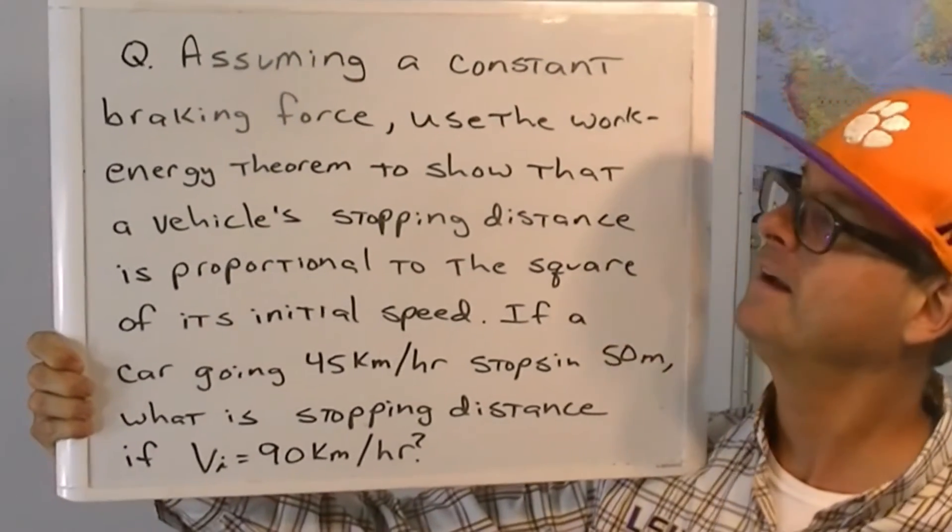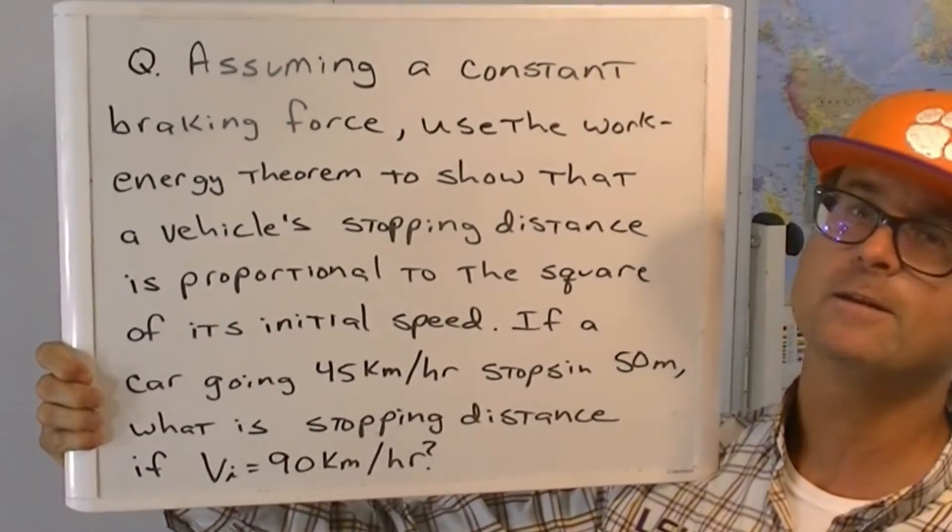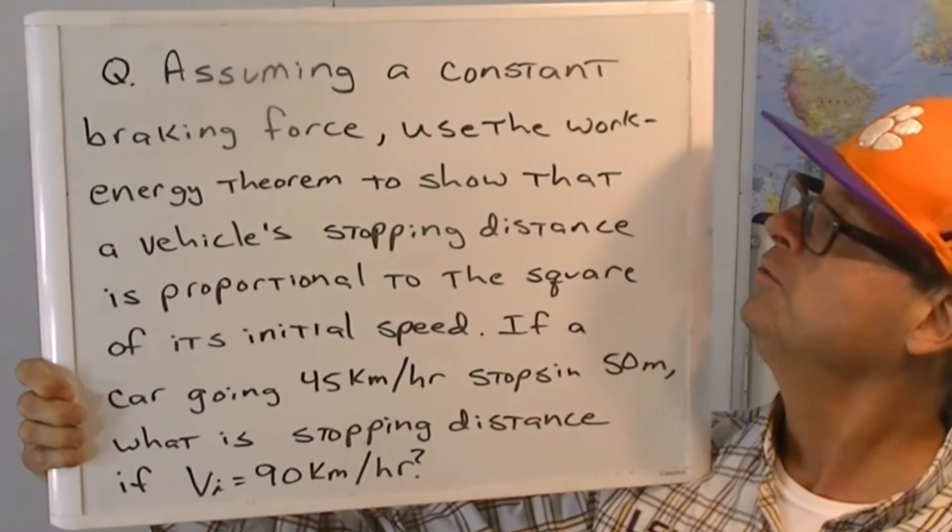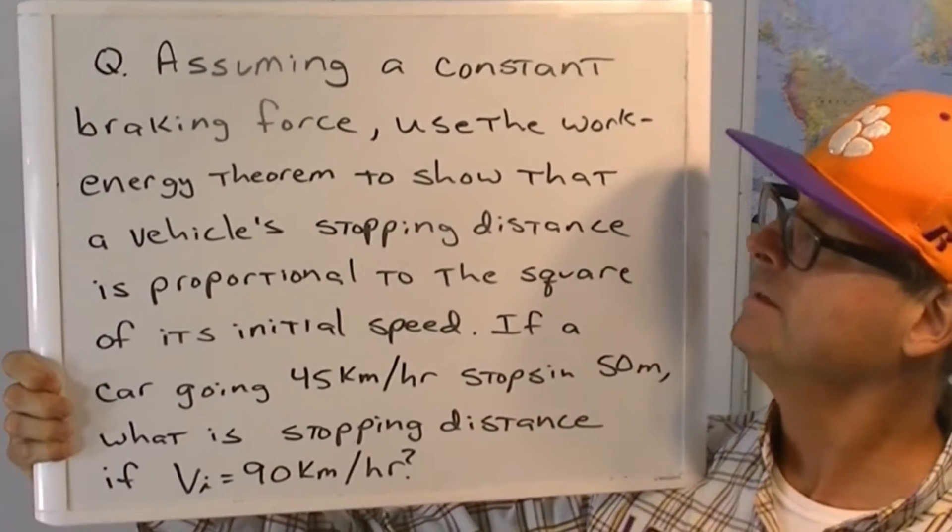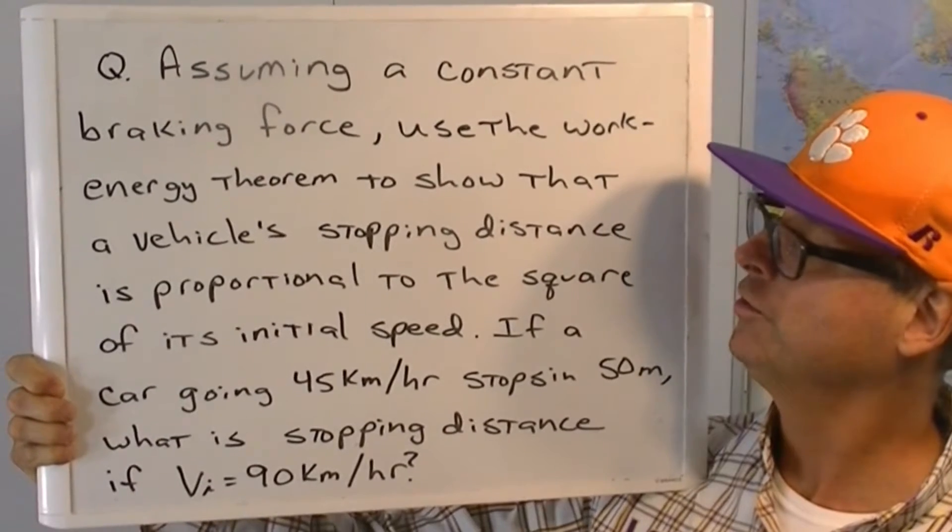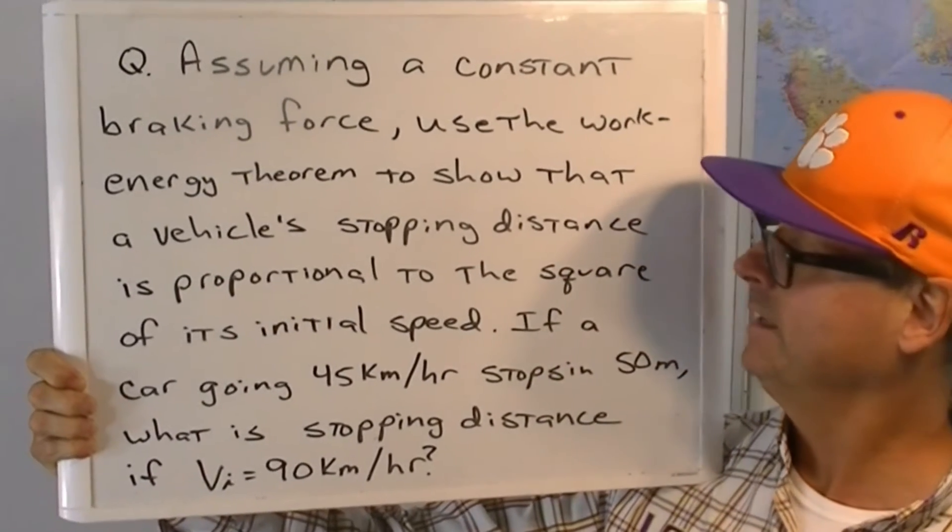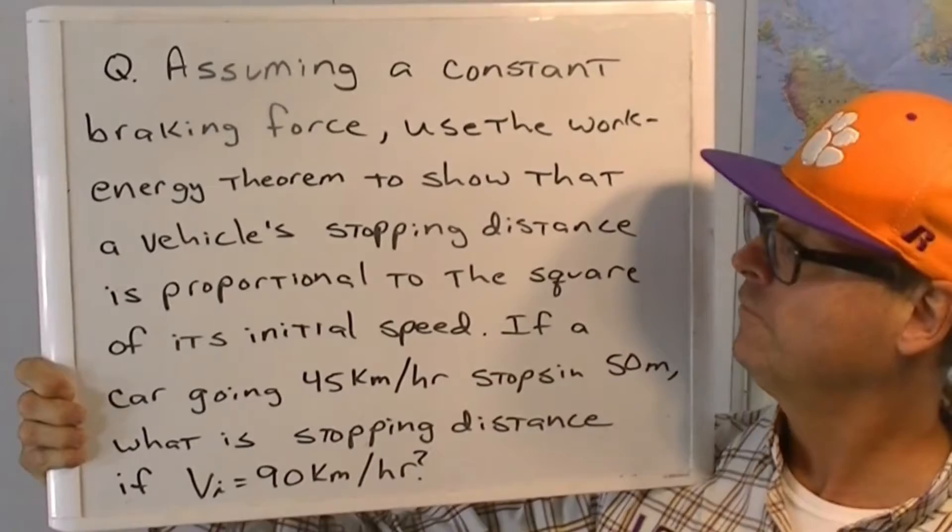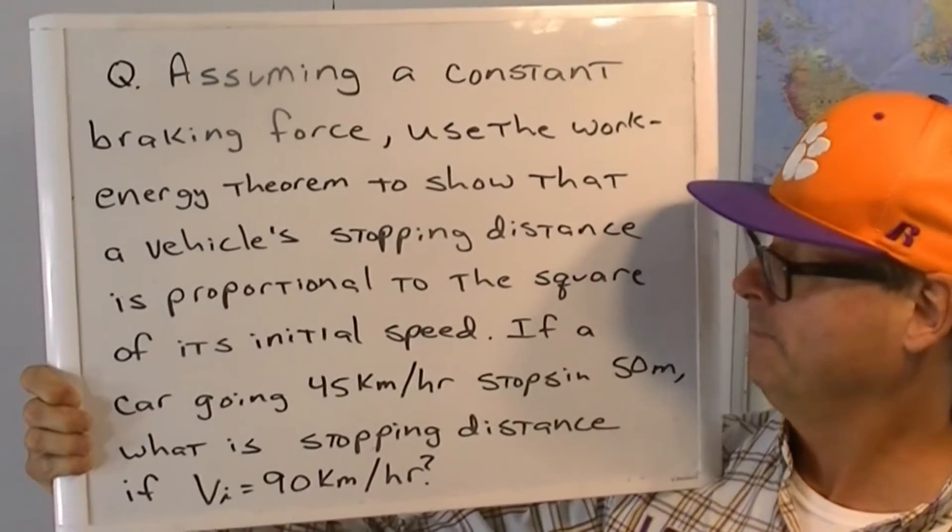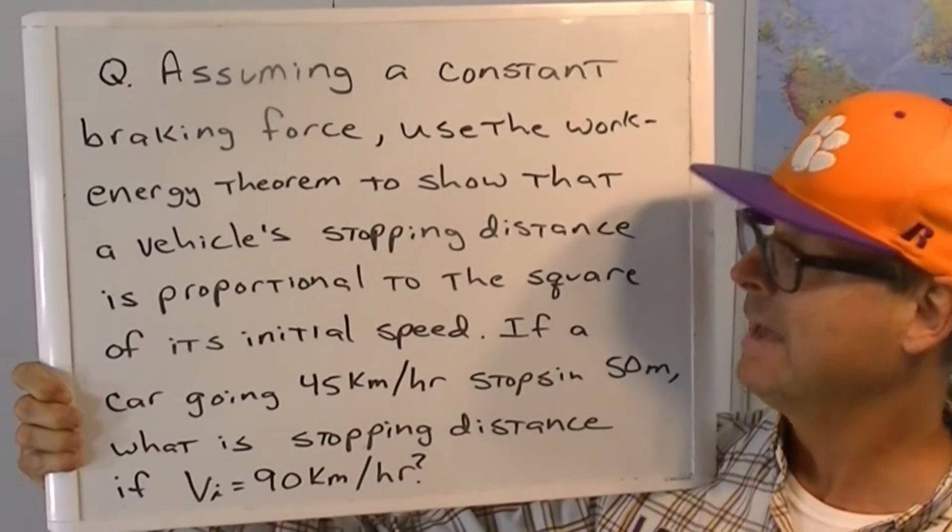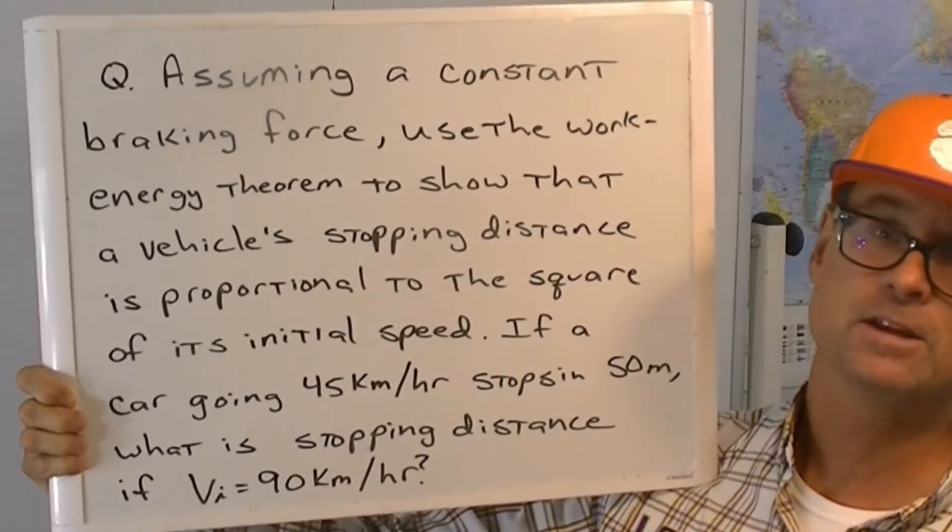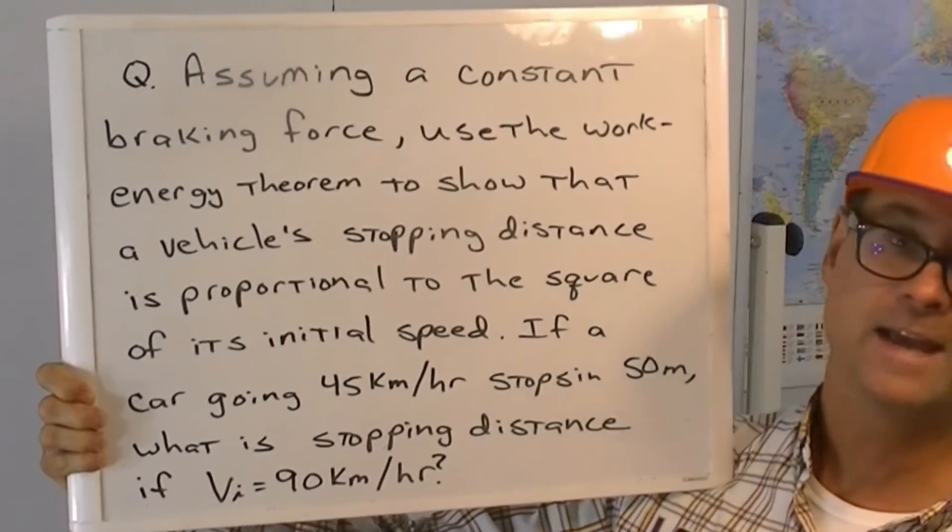Hey, Physics Boss Man coming back. Assuming a constant braking force, use the work energy theorem to show that a vehicle's stopping distance is proportional to the square of its initial speed. If a car going 45 kilometers per hour stops in 50 meters, what is the stopping distance if the initial speed is 90 kilometers per hour?